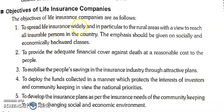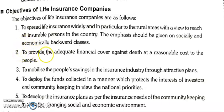The first objective is to spread life insurance widely, and in particular to the rural areas, with the view to reach all insurable persons in the country. The emphasis should be given on socially and economically backward classes. Life insurance companies' first objective is to spread the concept and facility of life insurance so that every person in the country can secure their future. Elite classes are already getting insurance, but the objective is to cover each and every insurable person.